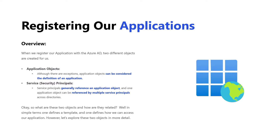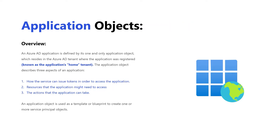So what are these two objects and how are they related? In simple terms, one defines a template and one defines how we can access the application. The application object — the template — is defined as follows: an Azure AD application is defined by its one and only application object, which resides in the Azure AD tenant where the application was registered. This is also known as the application's home tenant. The application object describes three aspects: how the service can issue tokens to access the application, what resources the application might need to access, and the actions that the application can take.